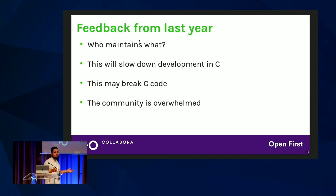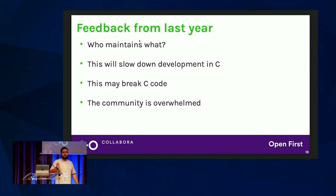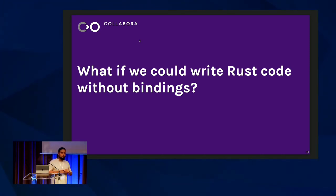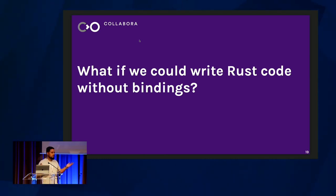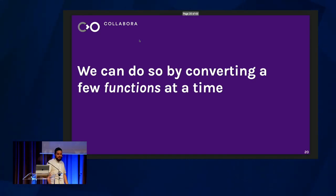This is something we've been hearing a lot as Rust developers: who's going to maintain this layer of abstractions? Will these abstractions slow down development in C? If I have a bunch of abstractions and I don't know any Rust and I'm a kernel maintainer writing C code, will I get bogged down because of your Rust abstractions? Will this break my code? And the Video for Linux community also said they're already overwhelmed and you want to merge support for this new language. So I thought to myself: what if we could sidestep the entire problem? And that's why I'm here today.